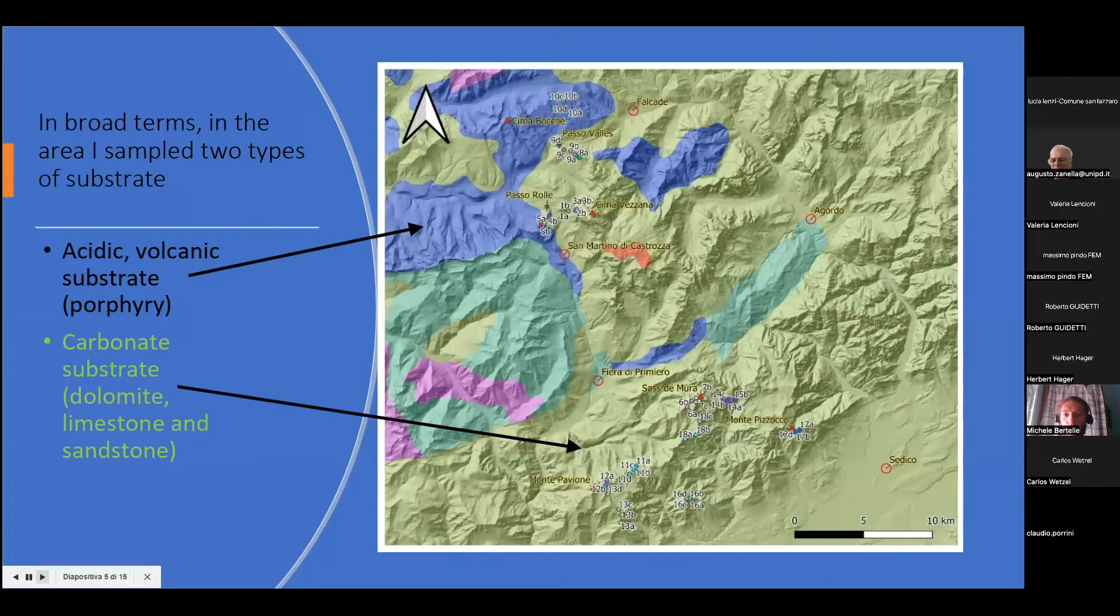In the north area, there is the border between the carbonate substrate and the volcanic substrate. In the south, it's only carbonate substrate but it's divided into different types of rocks, in particular dolomites and sandstones and a bit of limestones.